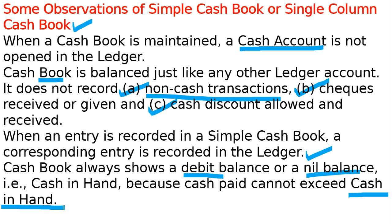To write a single column cash book, just use the format you learned for a cash account in the ledger, and instead of 'account' write 'cash book' — that is all. In a double column cash book, there are columns for cash and bank, or cash and discount, or bank and discount. In a triple column cash book, there are three columns: discount, cash, and bank. In a petty cash book, only small cash payments are recorded. I will show you all four types of cash books practically, so be ready for that.